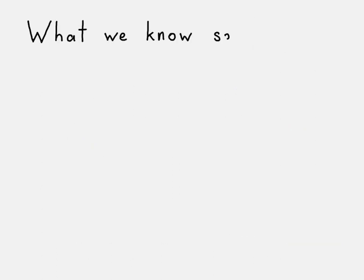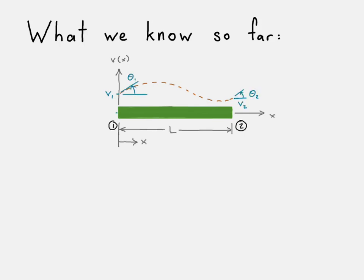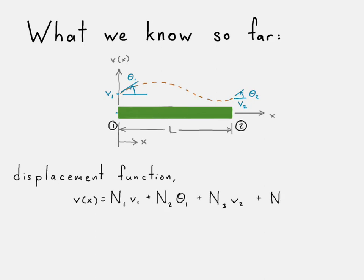What do we know so far about a beam element? We can go ahead and draw the beam element. There's what our displacement function looks like as we move from node 1 to node 2, showing our nodal displacements at either end and the slopes as well. We can write our displacement function, v of x, in terms of each of the shape functions and their corresponding displacements. There are our shape functions.